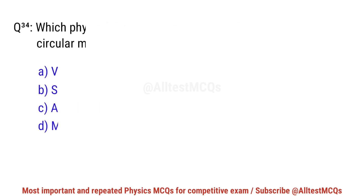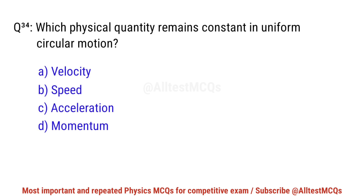Question No. 34. Which physical quantity remains constant in uniform circular motion? Right option is B. Speed.